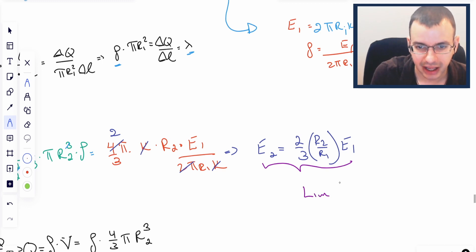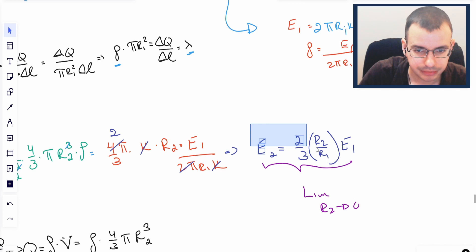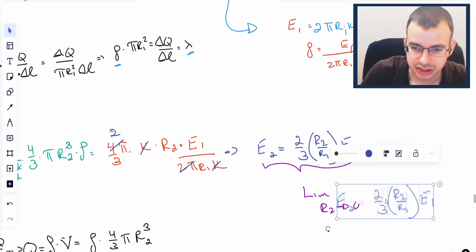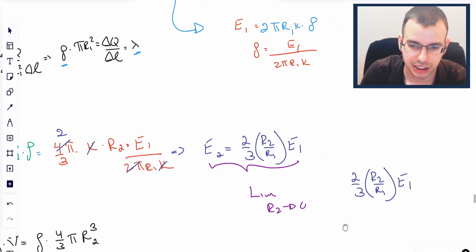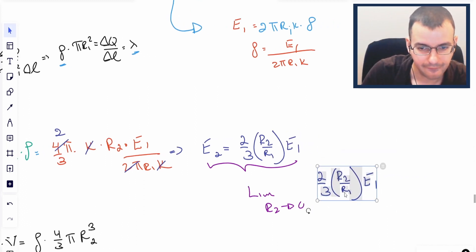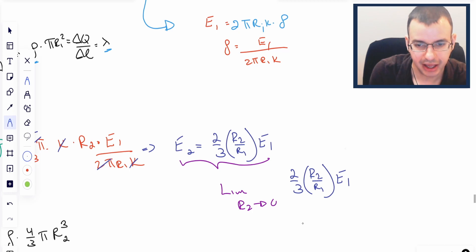We're going to take the limit as R2 goes to zero. As R2 goes to zero, that goes to zero. Which would mean that when we have an infinitely small radius, zero radius, we're going to have no charge, therefore no electric field.